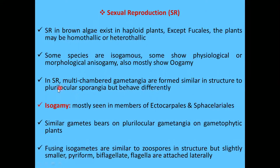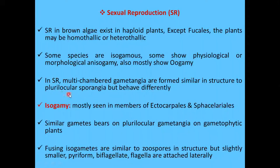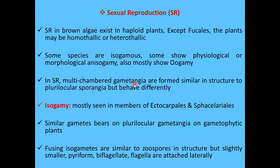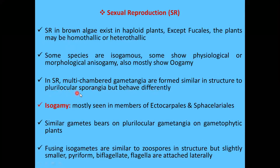Plurilocular sporangia, which we discussed in asexual reproduction, are sporangia that have many locules or cavities. In sexual reproduction, the gamete-forming chamber is known as multichamber gametangia, which is similar to plurilocular sporangia but produces gametes instead of spores.